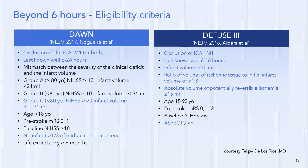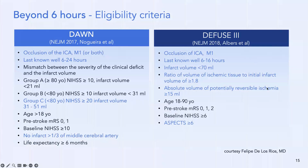What about beyond six hours? In 2017 and 2018, two groundbreaking trials came: DAWN and DEFUSE 3, looking at the greater-than-six-hour time frame. DAWN went up to 24 hours, DEFUSE 3 up to 16 hours. DAWN looked at small infarct volumes — the largest included was 51 cc's — and required no infarct greater than one-third the MCA territory. DEFUSE 3 allowed infarct volume up to 70 cc's, required a ratio of ischemic tissue to initial infarct volume ≥1.8 on CT perfusion, and an absolute volume of potentially reversible ischemia ≥15 cc's.